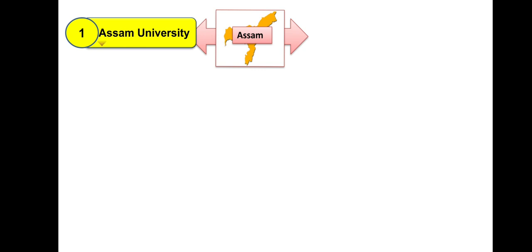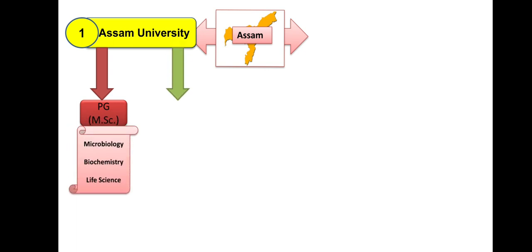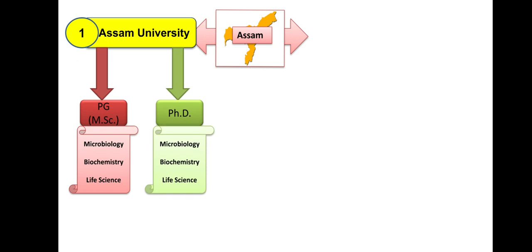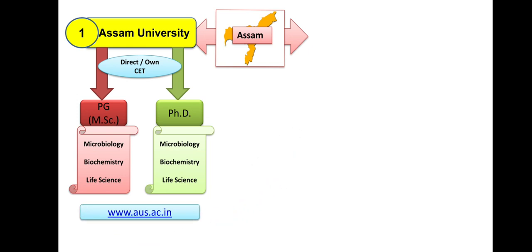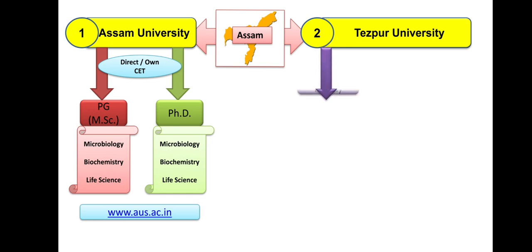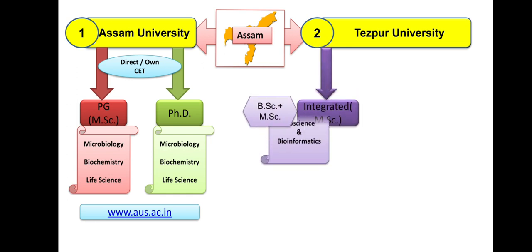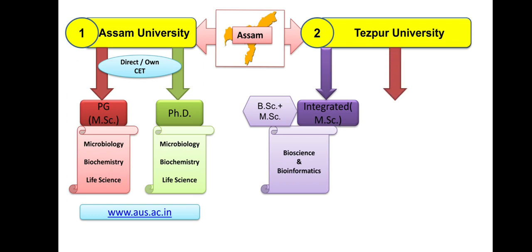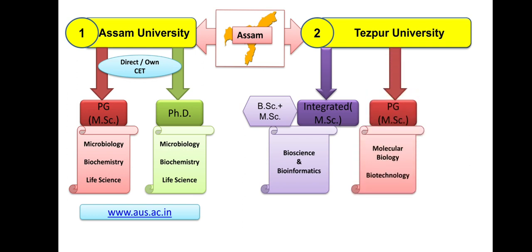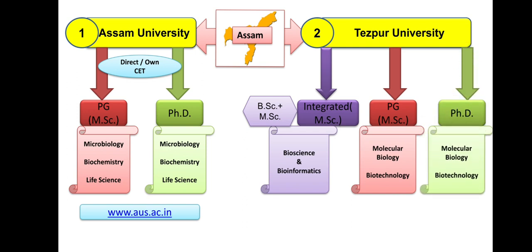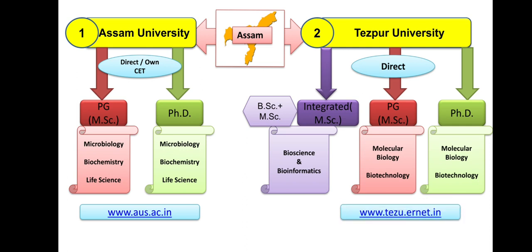Assam has two universities with Biological Sciences. Assam University: PG in Microbiology, Biochemistry, and Life Science; PhD in Microbiology, Biochemistry, and Life Science. Admission is either direct or through their own entrance examination — some courses may be direct, others with entrance. Details on the website. Second is Tezpur University: Integrated MSc (BSc plus MSc) in Bioscience and Bioinformatics; standalone MSc in Molecular Biology and Biotechnology; PhD in Molecular Biology and Biotechnology. Admission at Tezpur is direct.